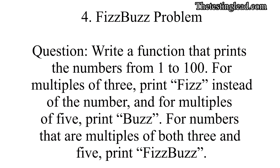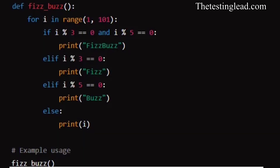FizzBuzz problem. Write a function that prints the numbers from 1 to 100. For multiples of 3, print Fizz instead of the number, and for multiples of 5, print Buzz. For numbers that are multiples of both 3 and 5, print FizzBuzz. The function iterates from 1 to 100 and uses conditional statements to check the divisibility by 3 and 5.